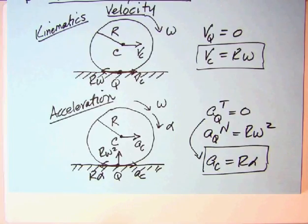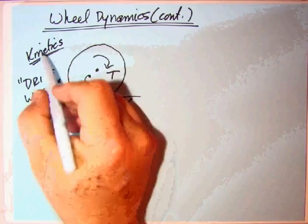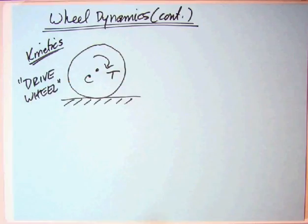That's a review of the kinematics of the rolling wheel. Now, what about the dynamics? We've got two possibilities. The first possibility, we call this kinetics, or it's also dynamics. Remember this is rolling wheel dynamics.